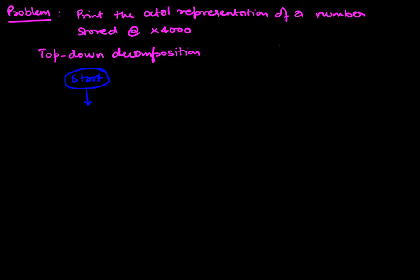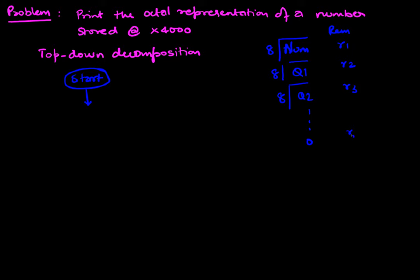The idea behind our conversion is: if you have a number, to get an octal representation we take the number and successively divide it by 8. We divide by 8, get a quotient and a remainder, then divide again by 8 to get R1, R2, and so on. We keep doing this process until the quotient is zero — that's when we know the procedure has ended.